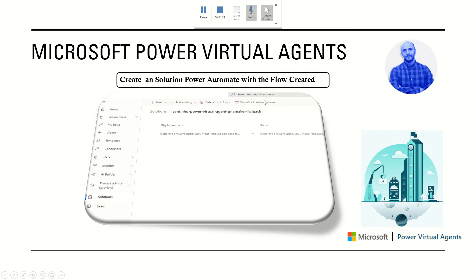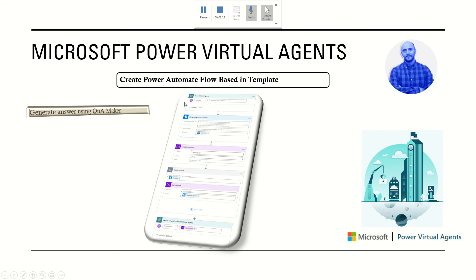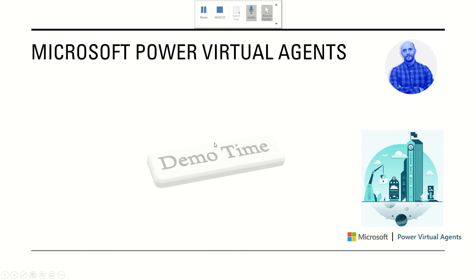We will publish our solution to our environment. Before that, we will create the system fallback topic to permit our bot to call Power Automate and of course QnA Maker. This is the canvas flow we will create to call QnA Maker.